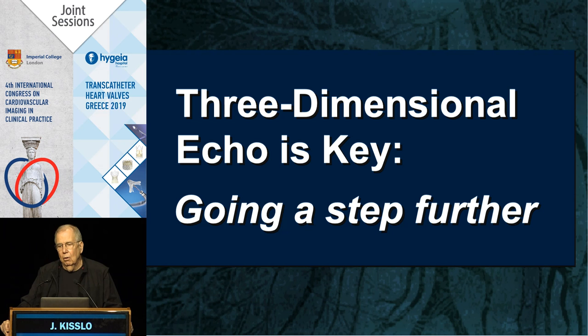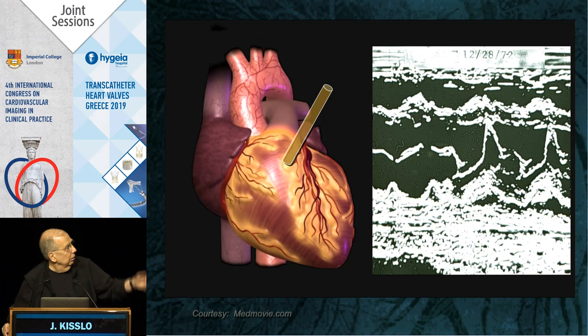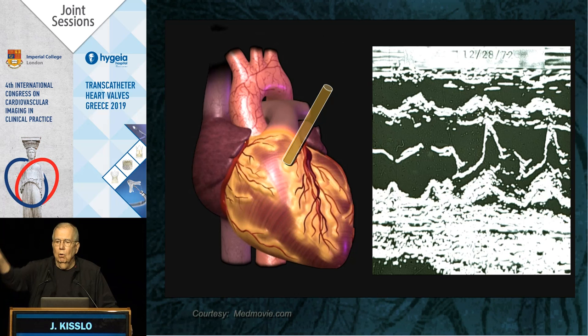When we started this business of imaging with ultrasound we were back in the days of M-mode. Here's an M-mode echo — this is one that I did in 1972 — where I took the transducer and swept from the aorta into the mitral valve. We did this all the time to try to create some concept of space.